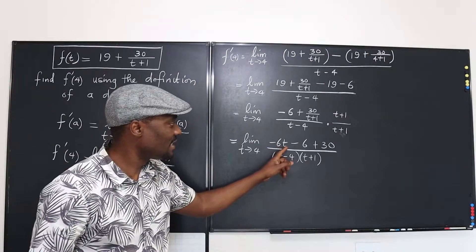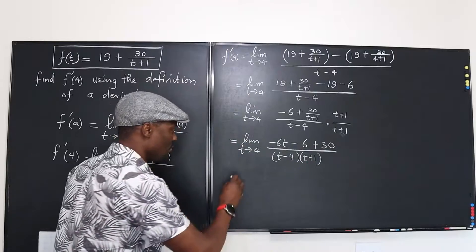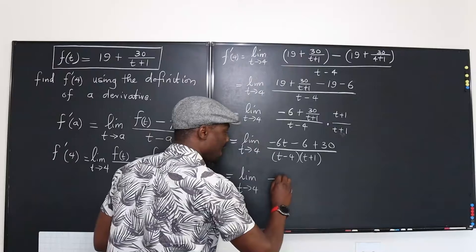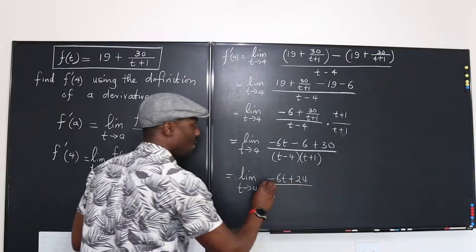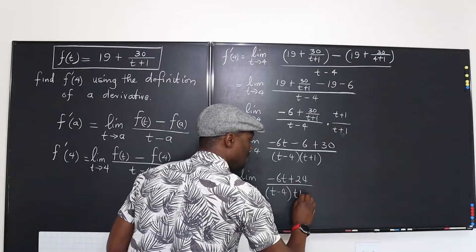What you have is negative 6t minus, that's negative 6t plus 24. So we can rewrite this as the limit as t approaches 4 of negative 6t plus 24 over t minus 4 and this is going to be t plus 4.